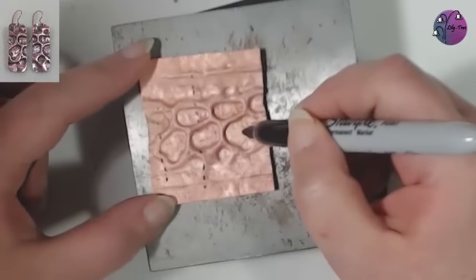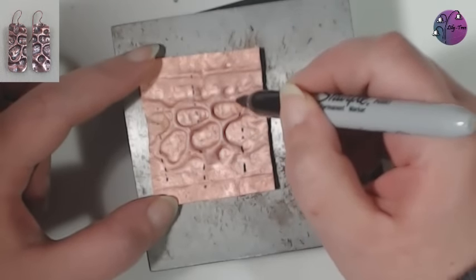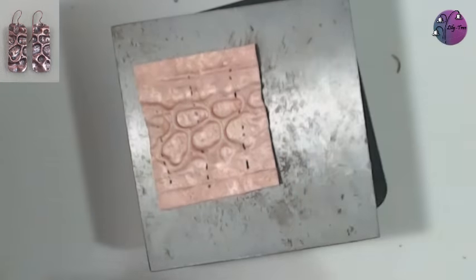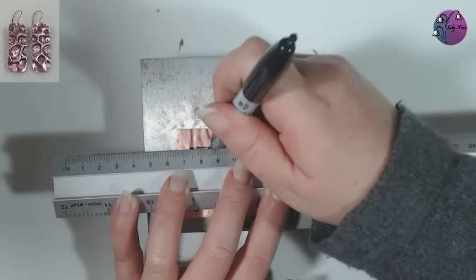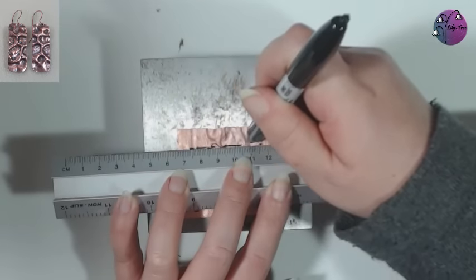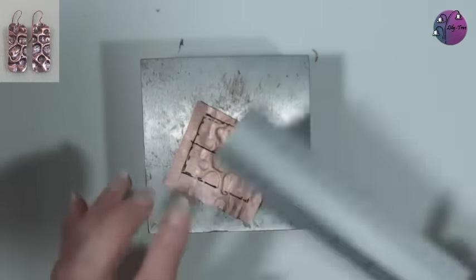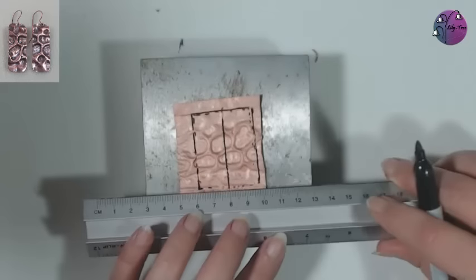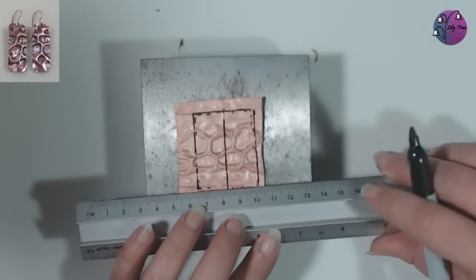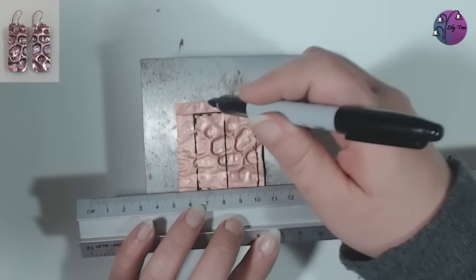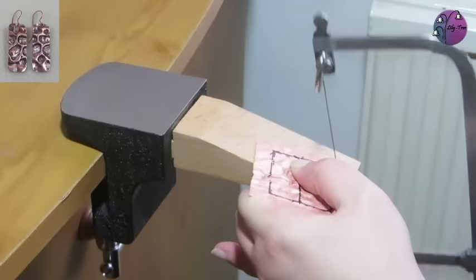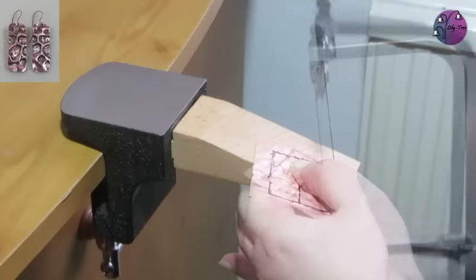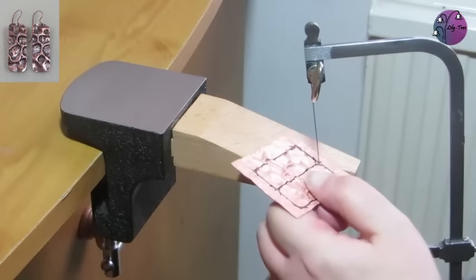And then about the same over the other side. And then we can just check and see if we like the design that's going to be on the two earrings. And then mark those lines on properly. Making sure the width is even, the sides are parallel and deciding what length we want the rectangles. I can then just use my jeweller's saw to cut out those shapes and make sure I've rounded off the corners.